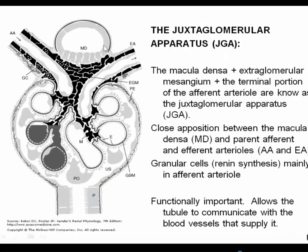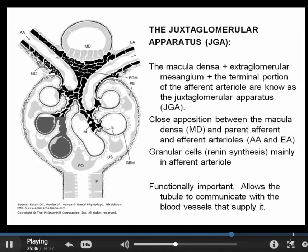Coming back to the point of apposition between the top of the thick ascending limb with the loop of Henle and the afferent and efferent arteriole — this area is called the juxtaglomerular apparatus, or JGA. This is the top of the thick ascending limb, and we have this specialized plaque of epithelium called the macula densa, which is in contact with the extraglomerular mesangial cells. These extraglomerular mesangial cells form a point of communication between the tubule through the macula densa and to the afferent arteriole.